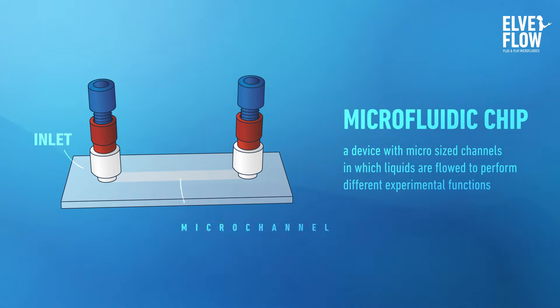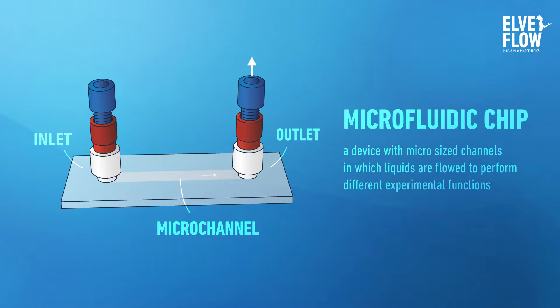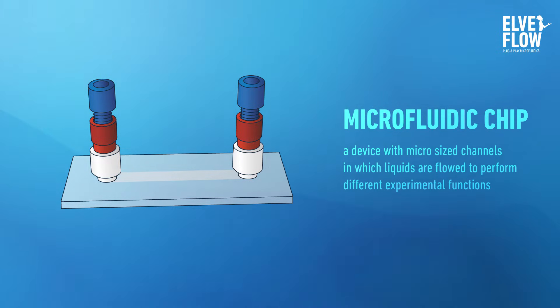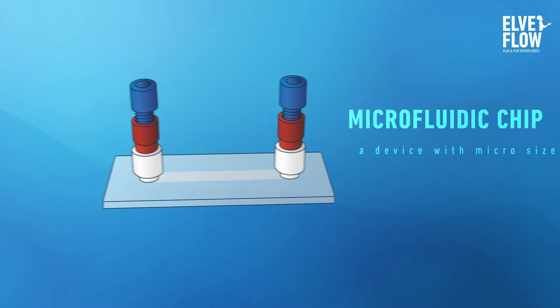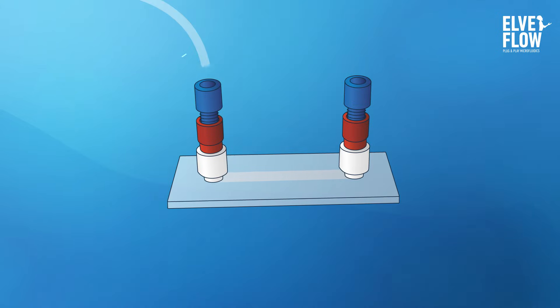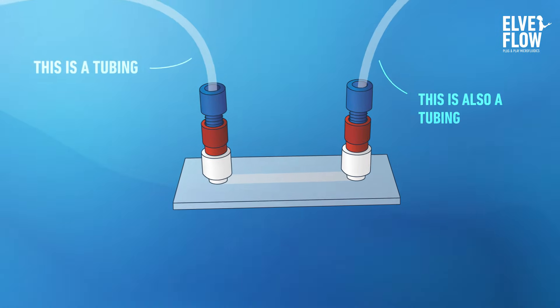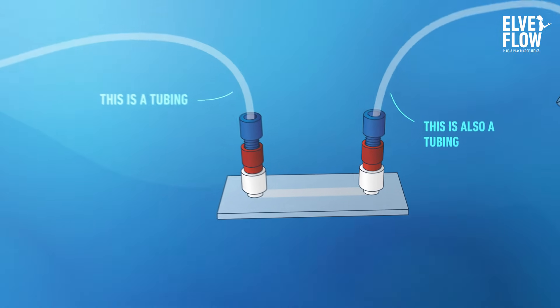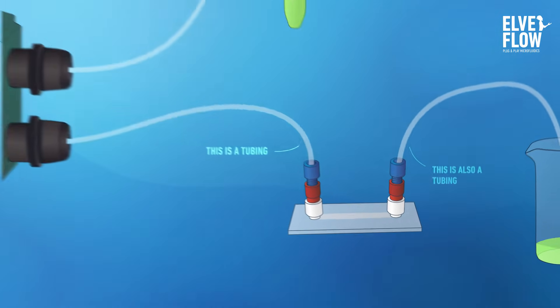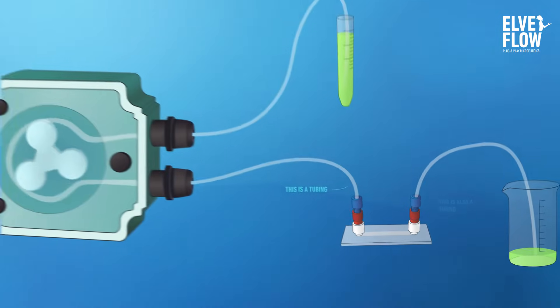The science of manipulating and controlling fluids at the micro to nanometer scale is called microfluidics. There are several ways to move liquids through a microfluidic system. Let's focus on the main three.